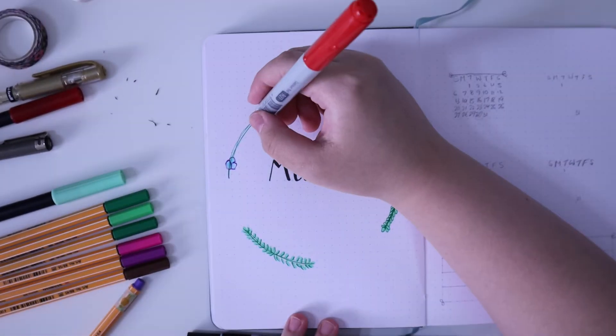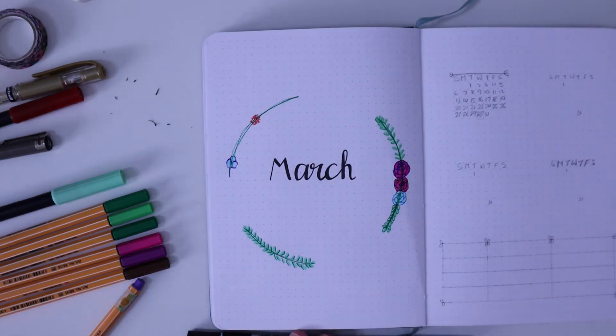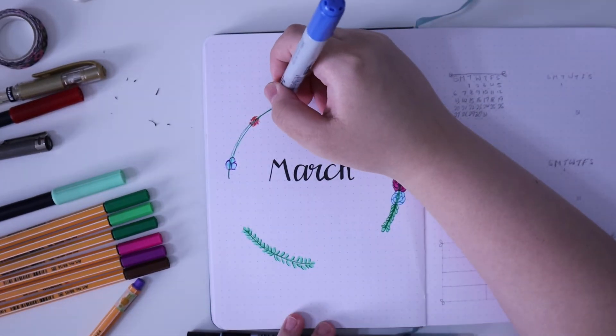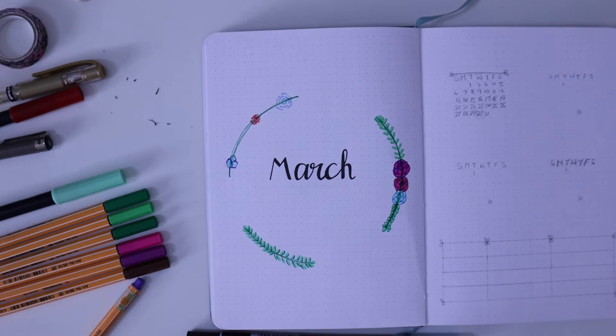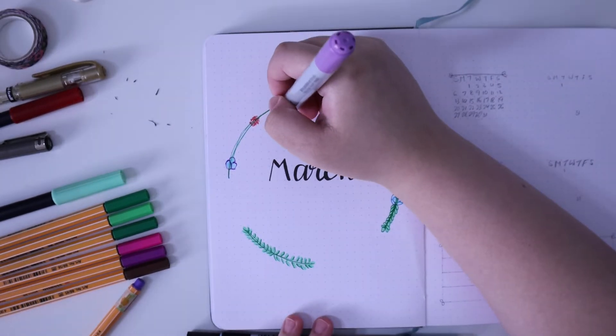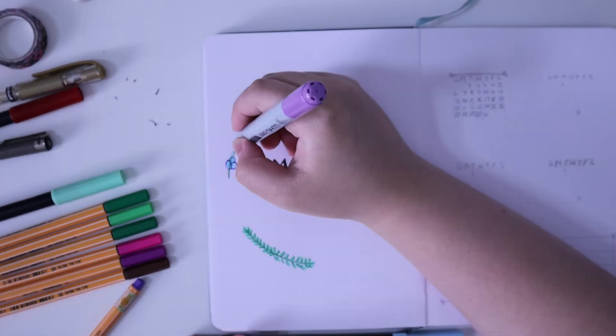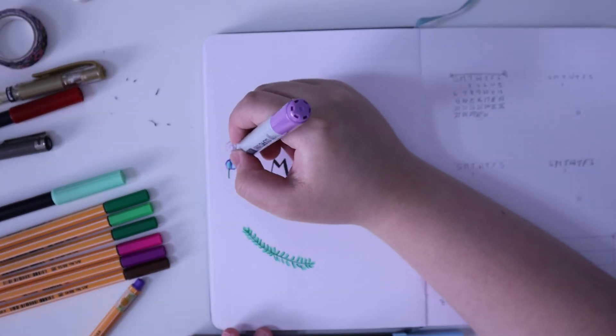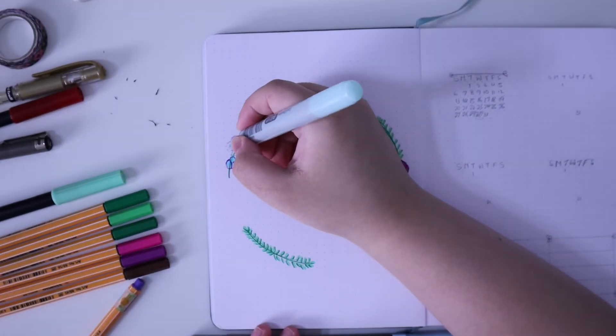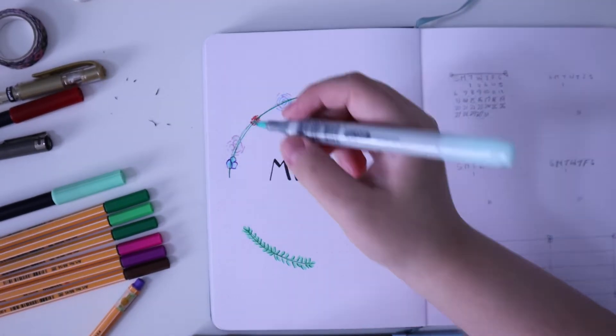Like always, I will try and have everything linked down below. Generally what I'm using is Unipin fineliners, an Artline fineliner, Tombow dual brush pens, and of course a bunch of Stabilo fineliners in a lot of different colors, and also Copics.